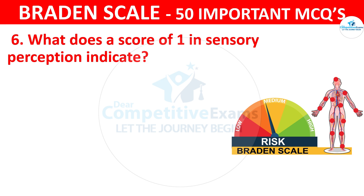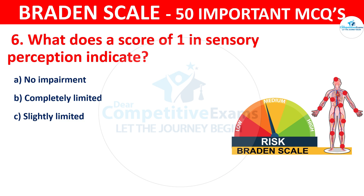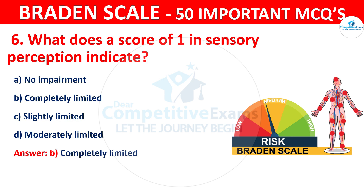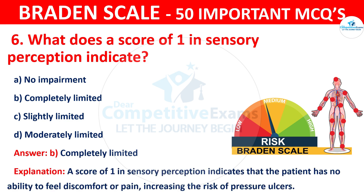Question number six: What does a score of one in sensory perception indicate? Your options are no impairment, completely limited, slightly limited, or moderately limited. The correct answer is B — completely limited. A score of one in sensory perception indicates that the patient has no ability to feel discomfort or pain, increasing the risk of pressure ulcers.